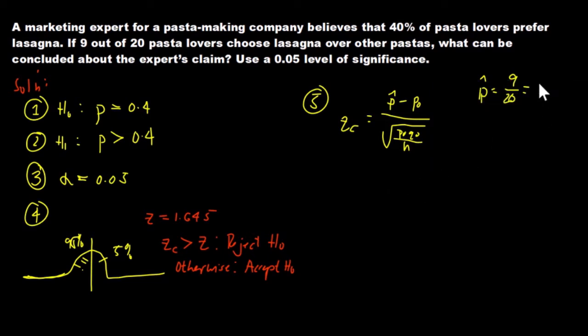Our P0, that is the claim of the expert, is 40% or 0.4. Our Q0 is 1 minus P0, which equals 1 minus 0.4, which equals 0.6. And our n, we have 20 respondents, so that is 20.